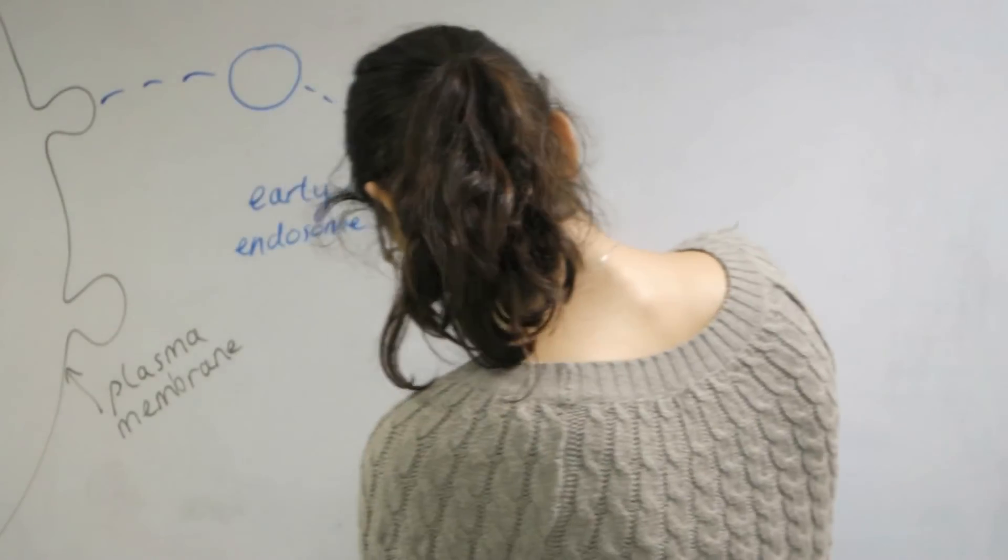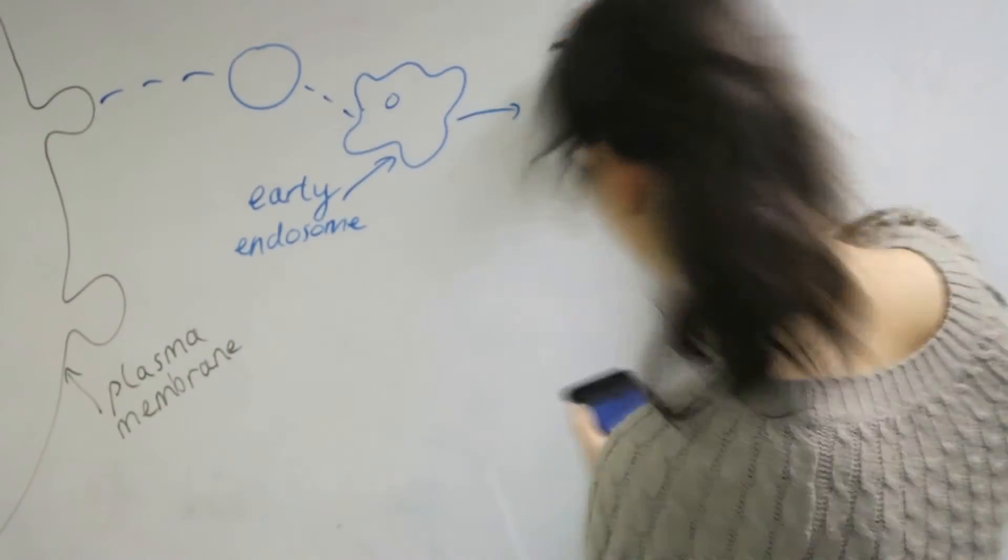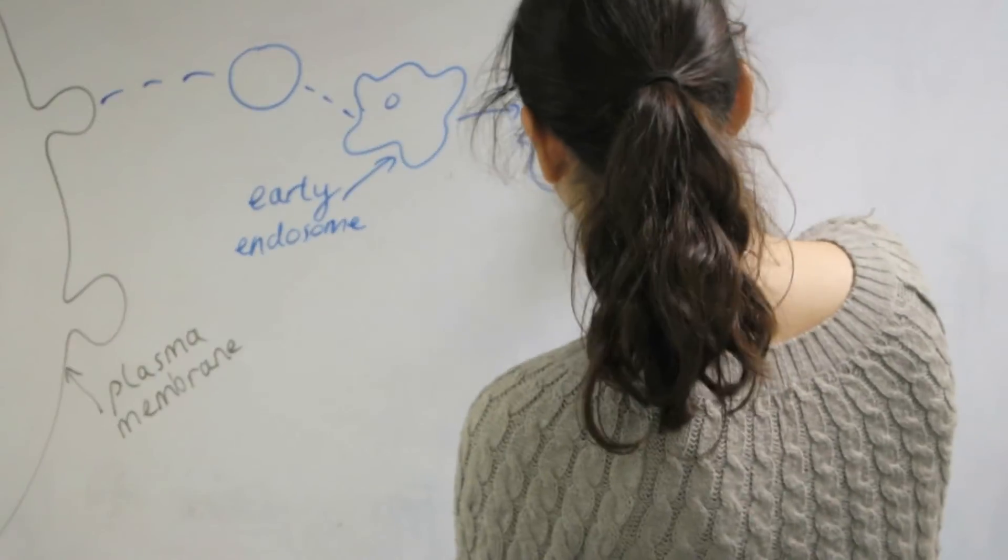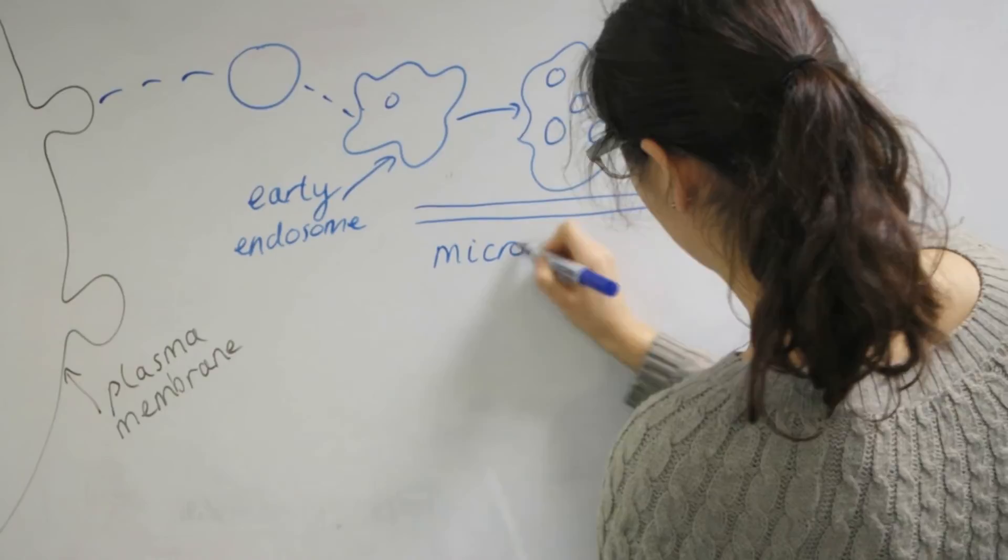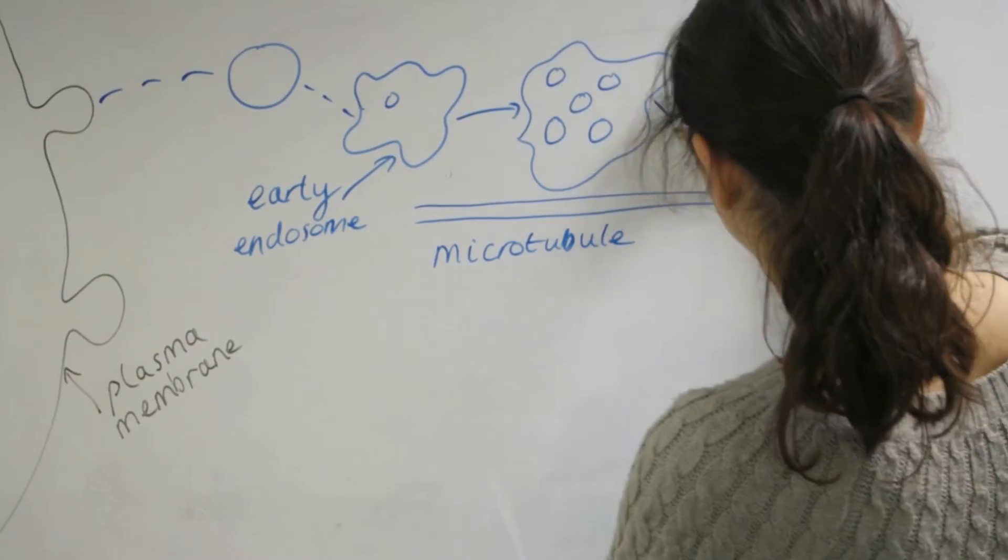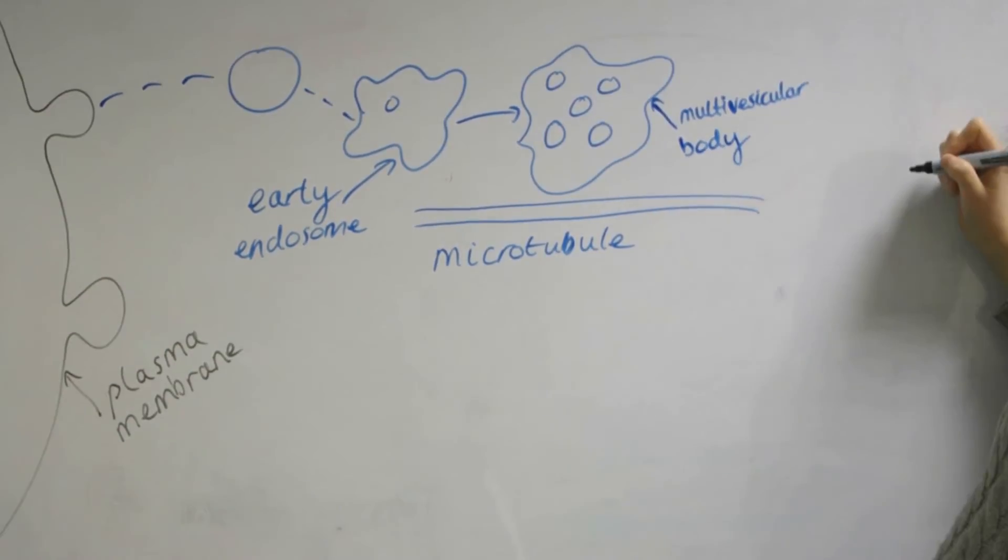These vesicles then fuse with an early endosome. The molecules are then sorted into intraluminal vesicles which are within the endosome. After many vesicles have formed in the endosome it becomes a multivesicular body.